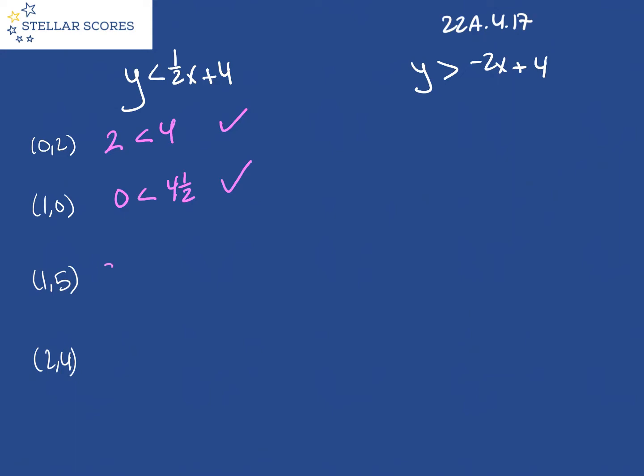Let's look at this one. Five is less than one half times one is one half plus four, four and a half. Oh wait, that's not true. Five is not less than four and a half. So this one's out.